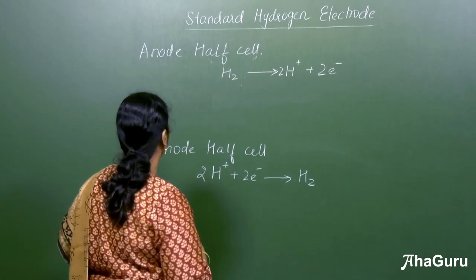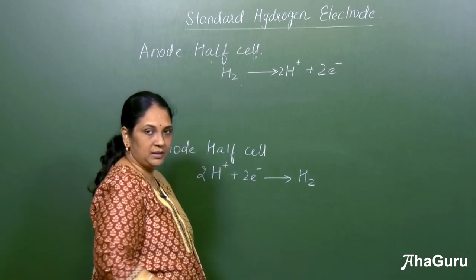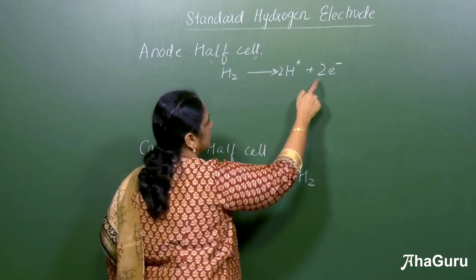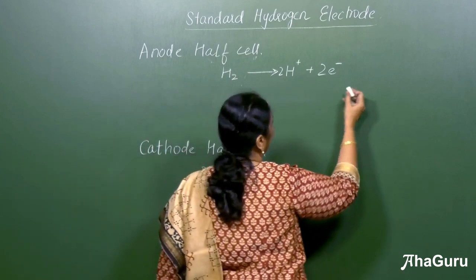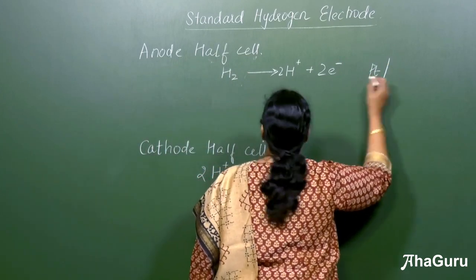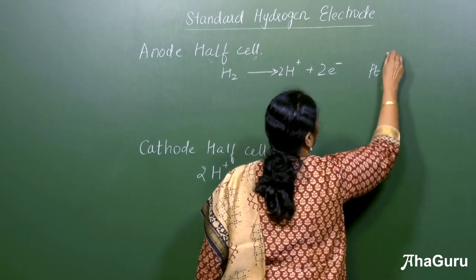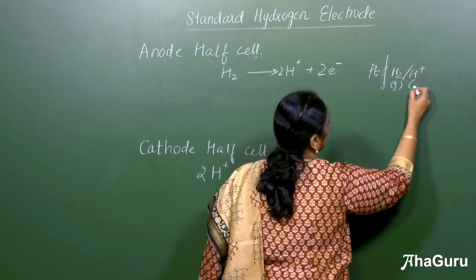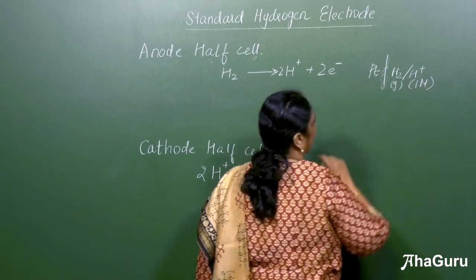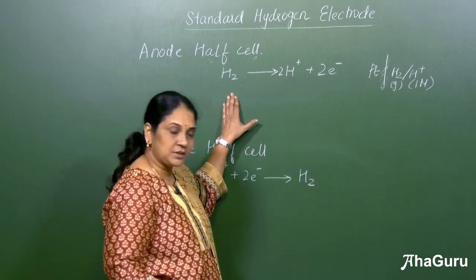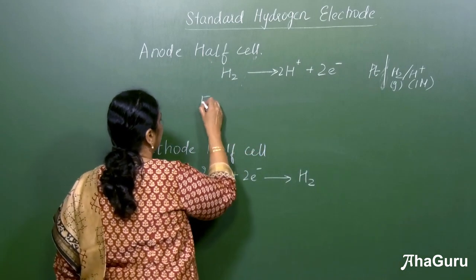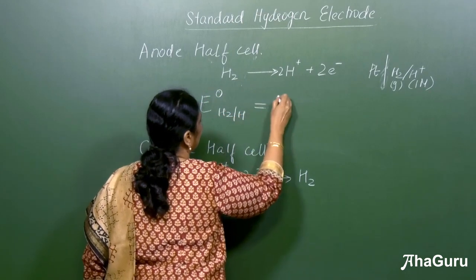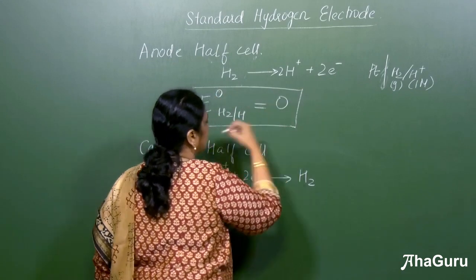Let us see the reactions involved. If we take the standard hydrogen electrode as the anode half cell, the reaction is: H2 → 2H⁺ + 2e⁻. The representation is: Pt | H2 | H⁺ (1M). This is the oxidation half cell, and the oxidation potential E°(H2/H⁺) is equal to zero.